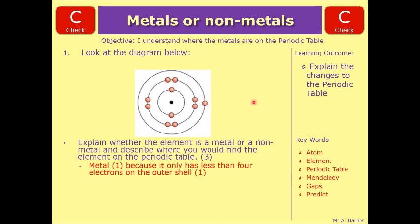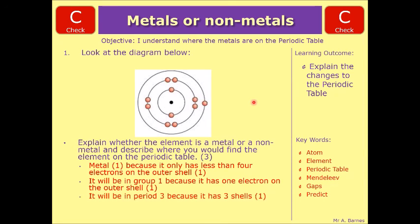Then the third mark which is for describing where you would find it you could talk about it'll be in group one because it has one electron on the outer shell. You could talk about it'll be in period three because it has three shells.